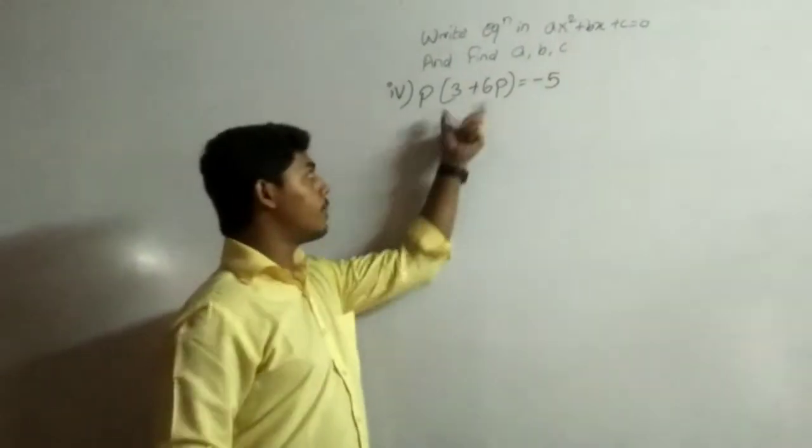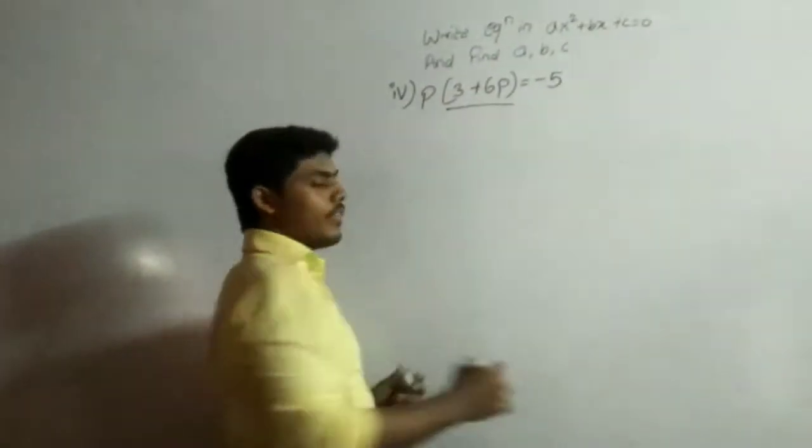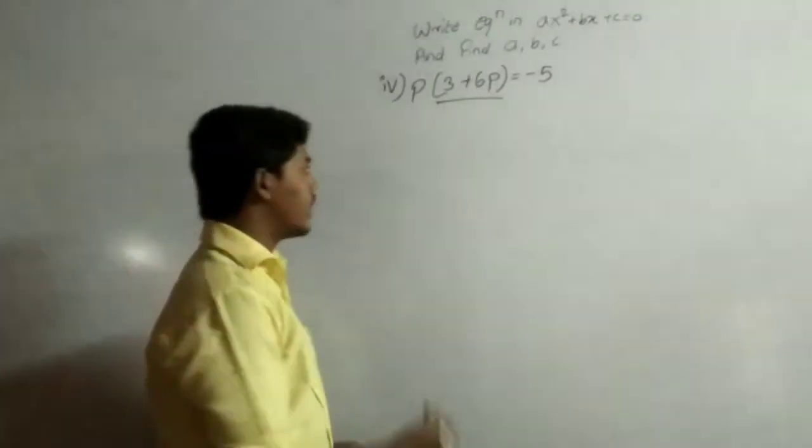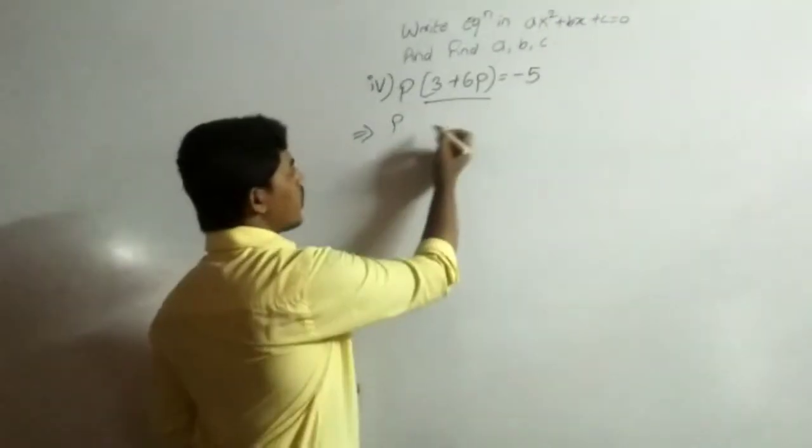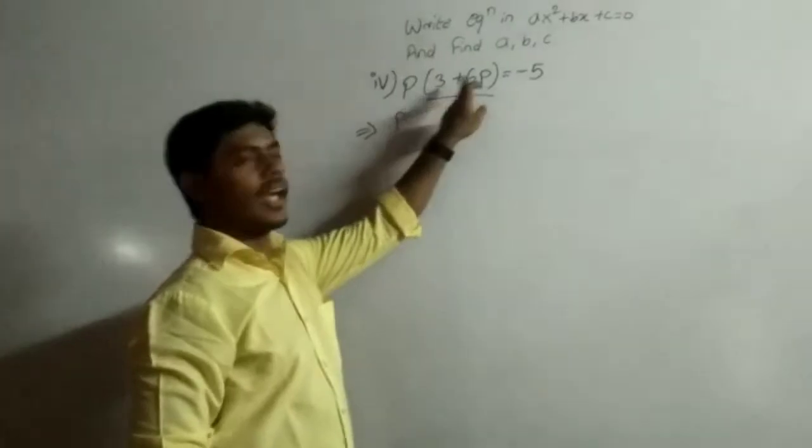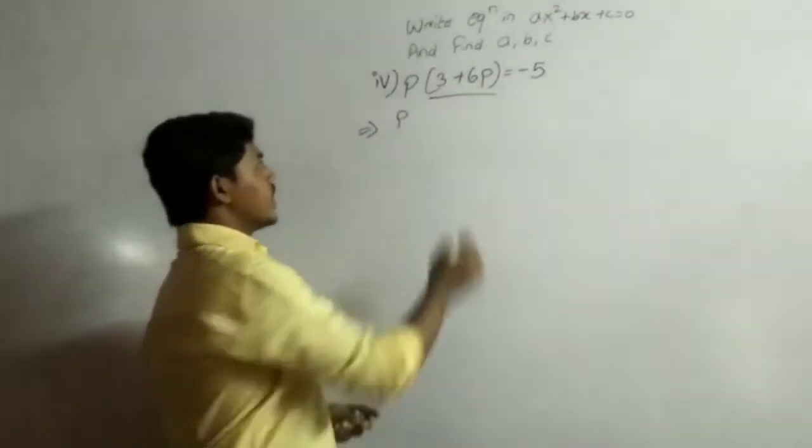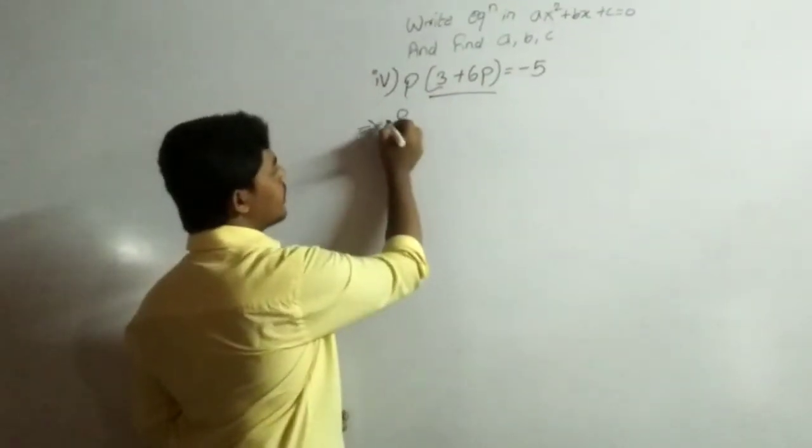First, you can solve it in a bracket and then you can solve it in an equation. Let's see, P in a bracket, solve it in a bracket. The second variable is 3P. Then, we can solve it in a bracket.